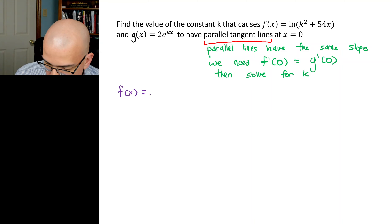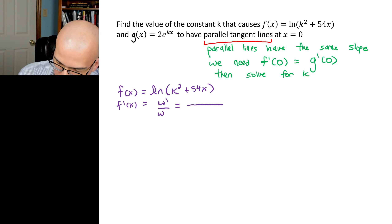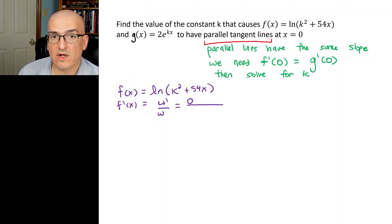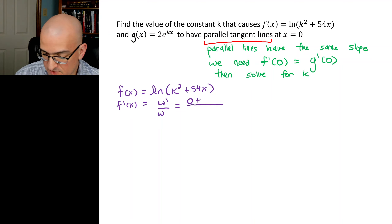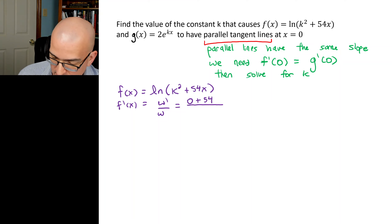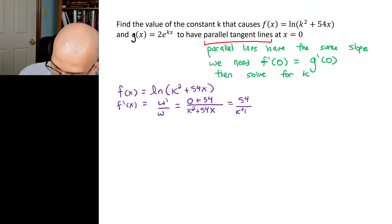f(x) = ln(k² + 54x). So f'(x) = w'/w. The derivative of k² is 0 (k is a constant), the derivative of 54x is 54. So f'(x) = 54 / (k² + 54x).